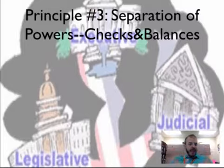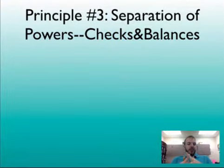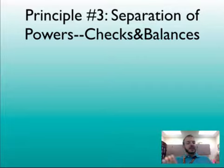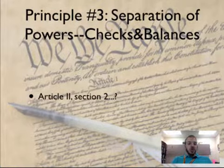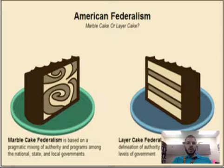Power in the hands of one branch would be tyranny, so we separate the powers and allow the different branches to check on each other. This prevents one branch from dominating, and the checks further limit the powers of those branches. We can see this throughout the Constitution in various shapes and forms.